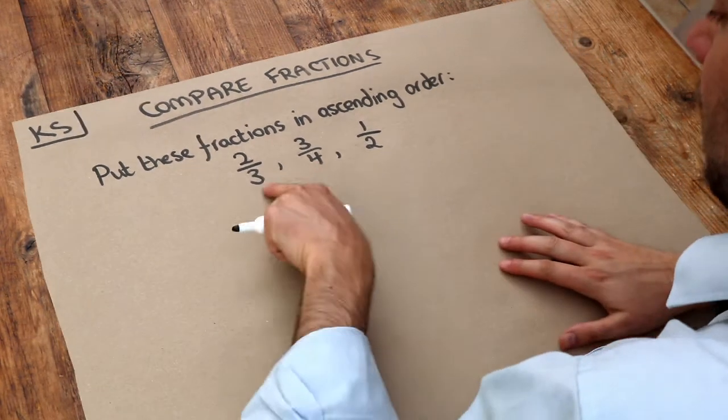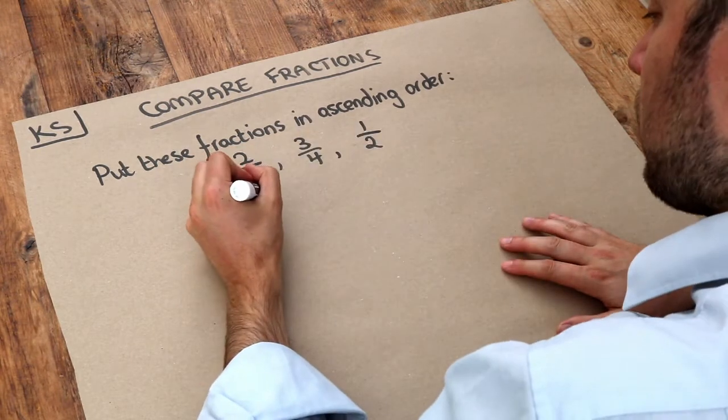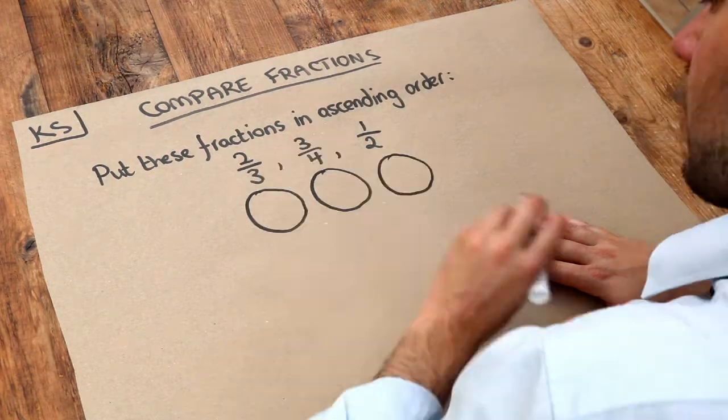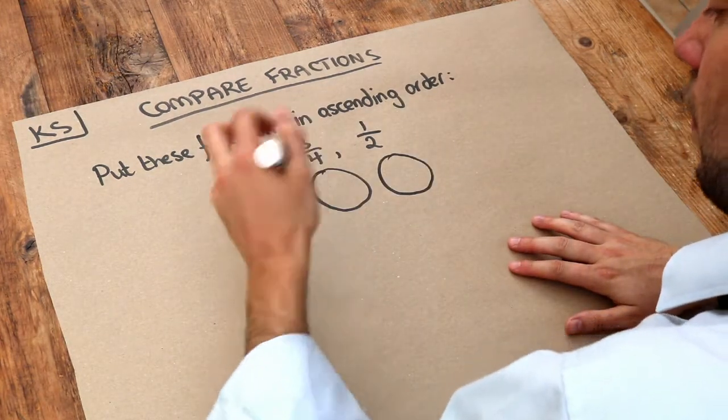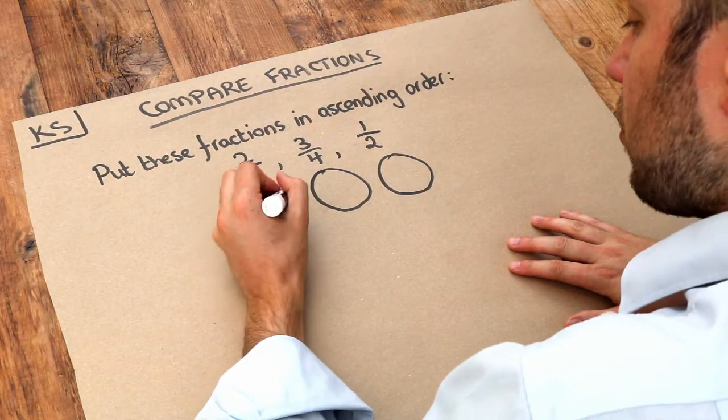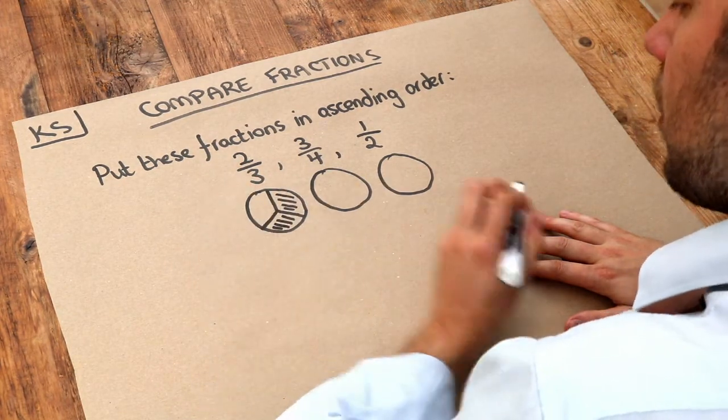We could do this visually if we take each of these fractions and draw them as pizza slices. This is two-thirds, so we split this into three and we want two of those thirds.